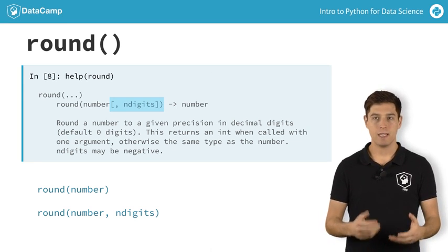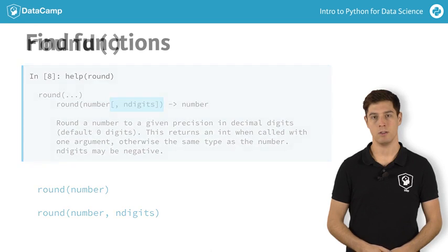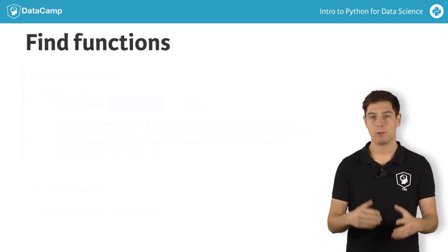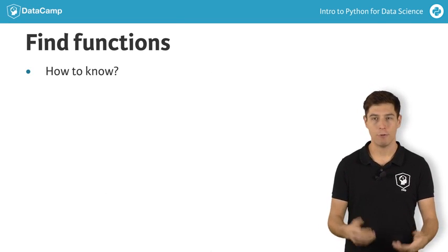Actually, Python offers yet another way to show that a function has optional arguments, but that's something for the exercises. By now, you have an idea about how to use max and round, but how could you know that a function such as round exists in Python in the first place?